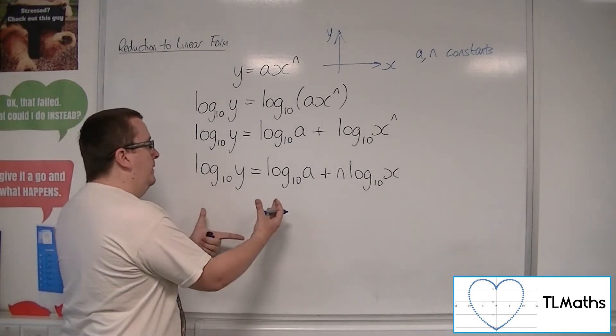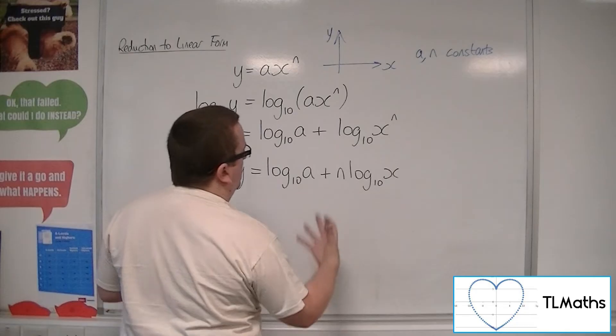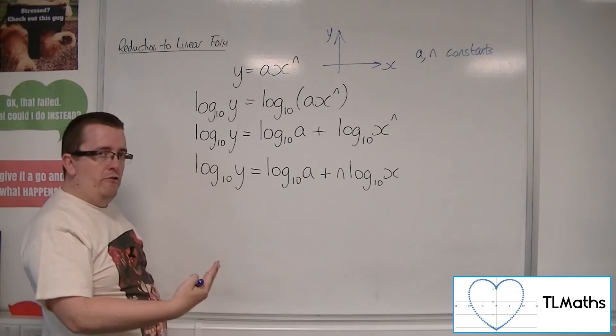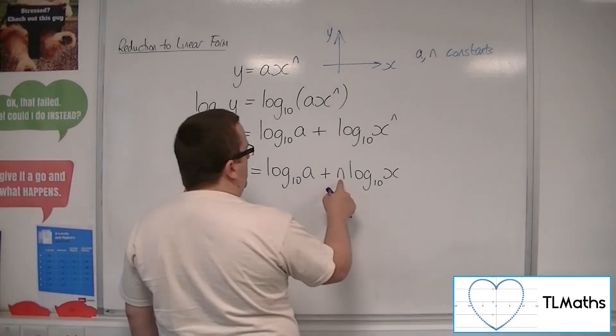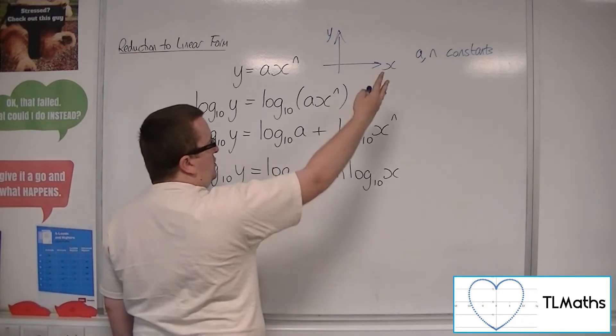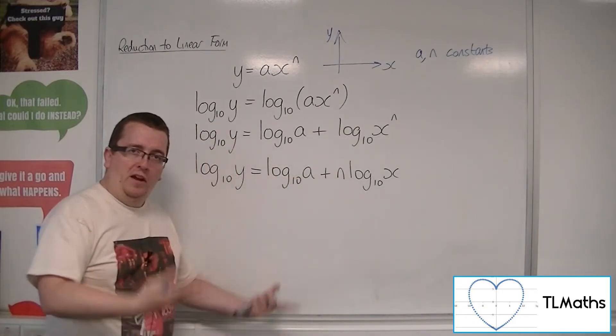Now here, because x and y were variables, log 10x and log 10y are the variables. The n is still a constant. Log 10a is just a constant. Because if a is just a number, log 10a is just a number.